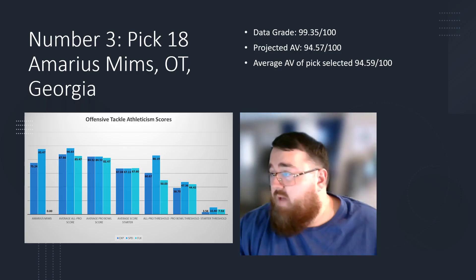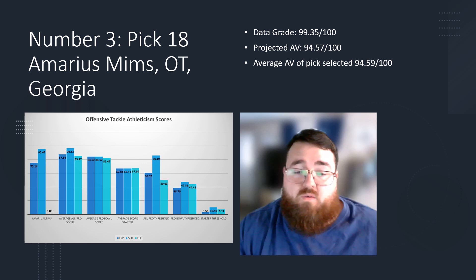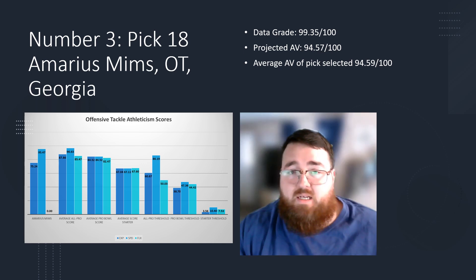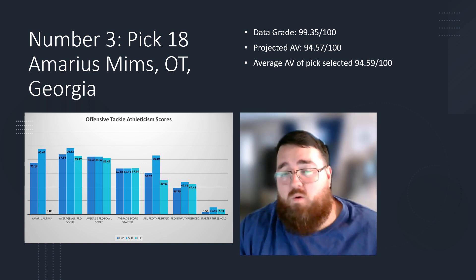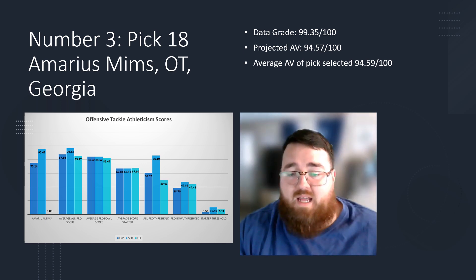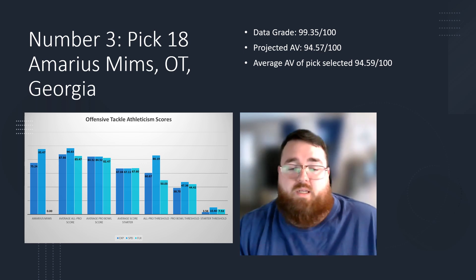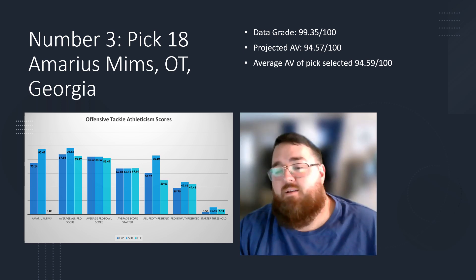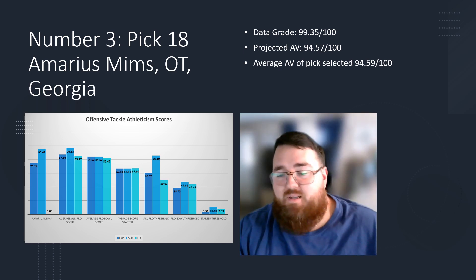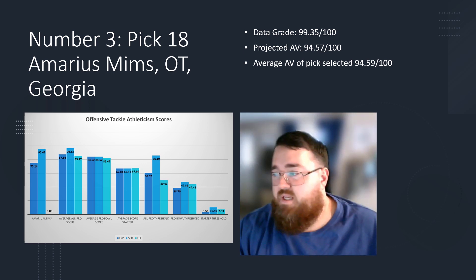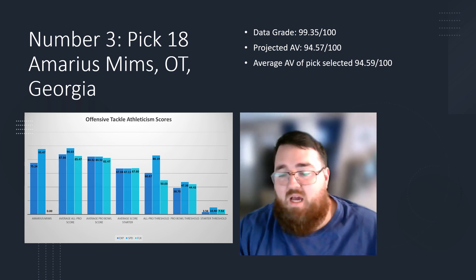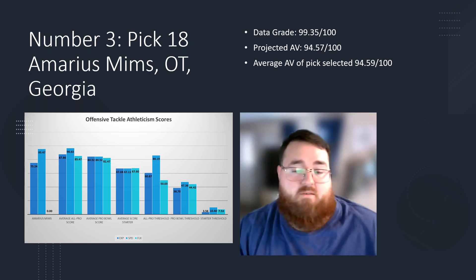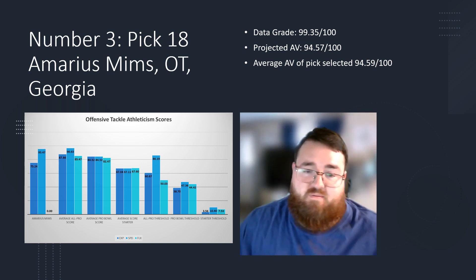Number three: Amarius Mims, offensive tackle from Georgia. His data grade was 99.35 out of 100, projected AV is 94.57 out of 100, and his DAV was 94.59 out of 100. He's kind of like Joe Alt without all the starts that Joe Alt had, but with better athleticism. You essentially got a top-10 pick at pick 18 — impressively strong overall pick.